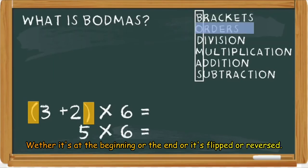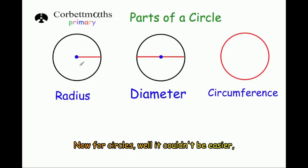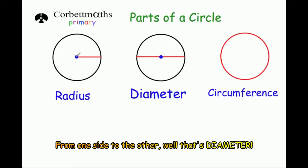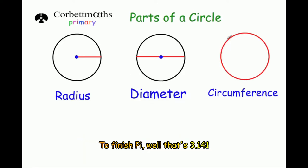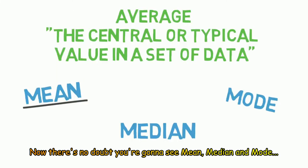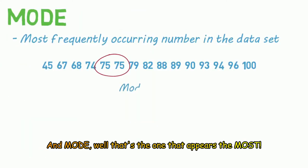Now for circles, well it couldn't be easier. From one side to the other, that's the diameter — that's equal to two lots of radius. It covers it around and you're done. To finish, pi is 3.141.